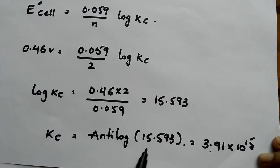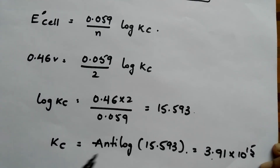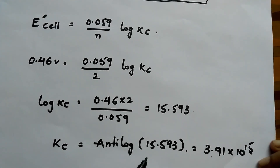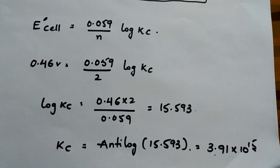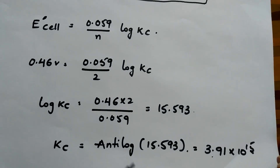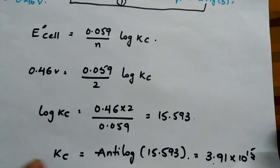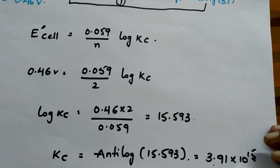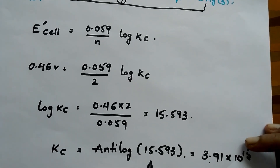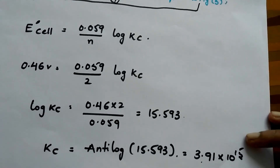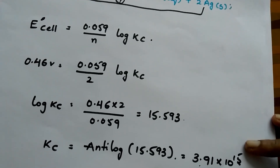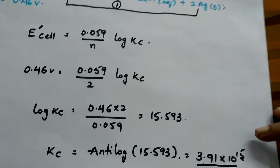For finding antilog, check out my previous videos where I explain the normal procedure as well as a trick. You can find it easily using a simple calculator, which is very helpful for your exam. Here the answer is 3.91 × 10¹⁵.